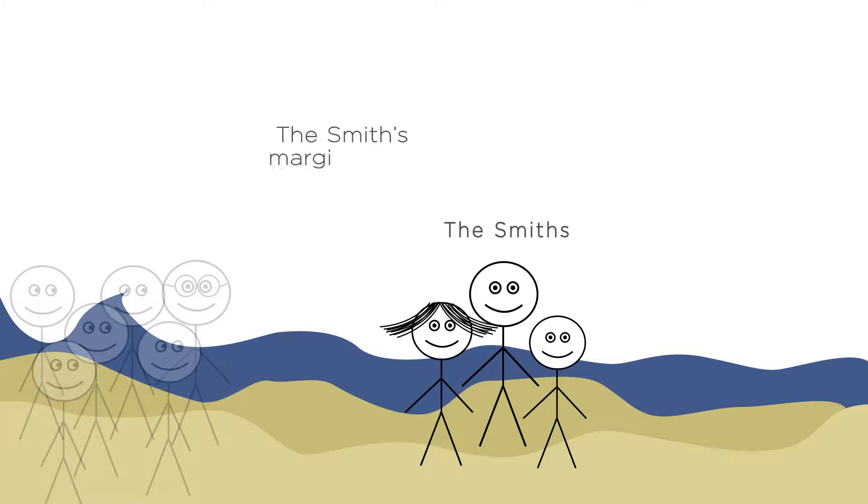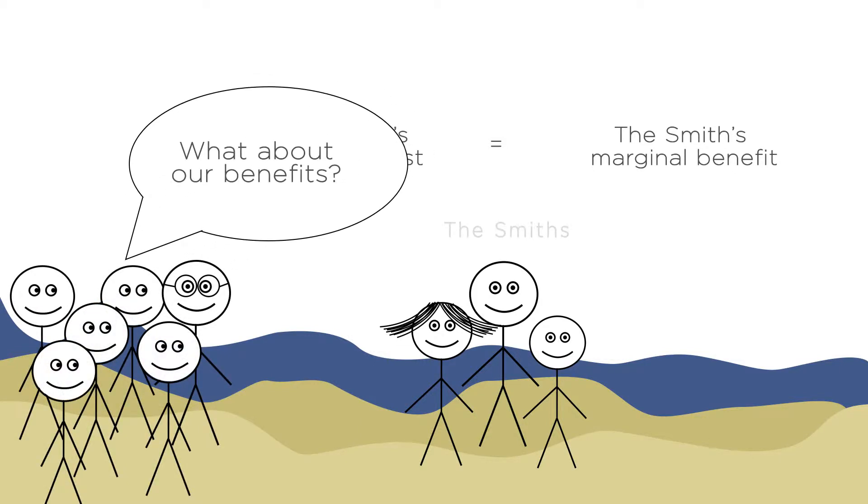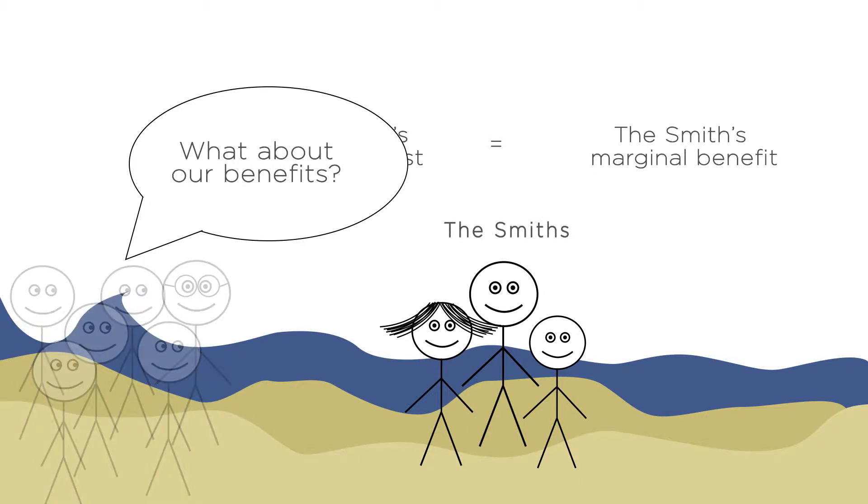They'll only buy fireworks until the marginal cost equals their marginal benefit. But this ignores the benefits that myself and others get from the fireworks. As a result, the private benefits to the Smiths are lower than the private benefits to everyone on the beach.